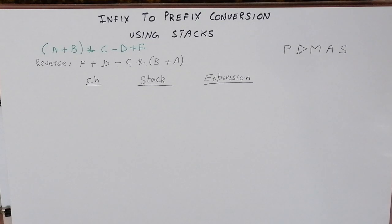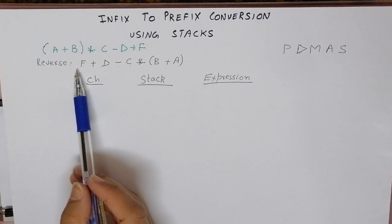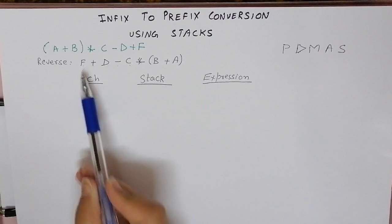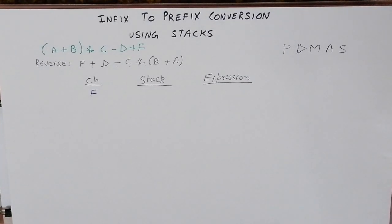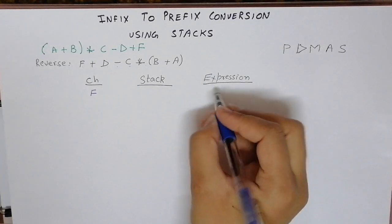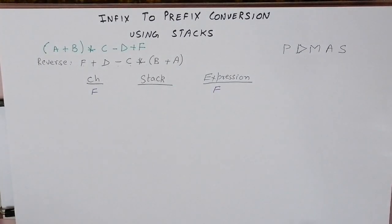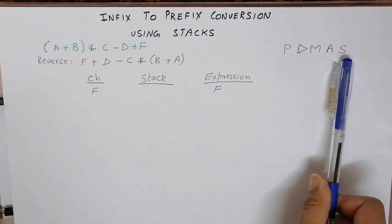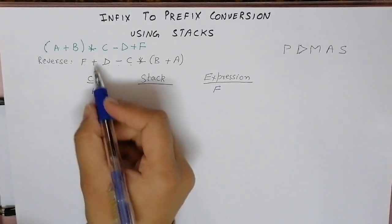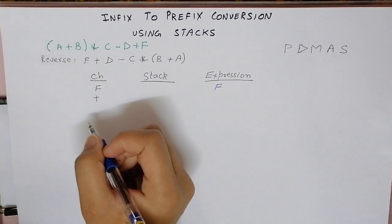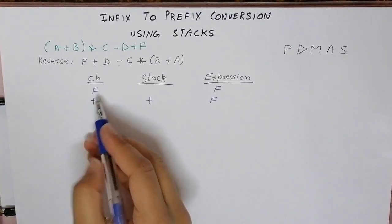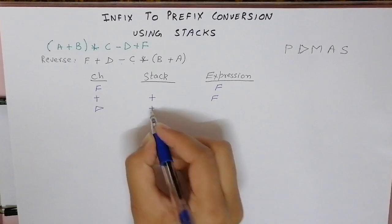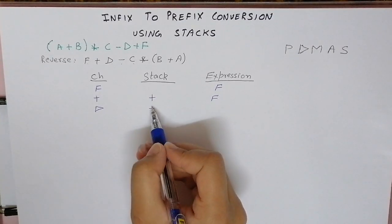Now we start evaluating the reversed expression character by character. The first character we encounter is F. The rule is: whenever you encounter an operand, you directly place it in the final expression, not in the stack. Only operators go into the stack. Next we encounter plus, which goes directly into the stack. Then we encounter D, another operand, so D is added to the expression: the expression is now F D.